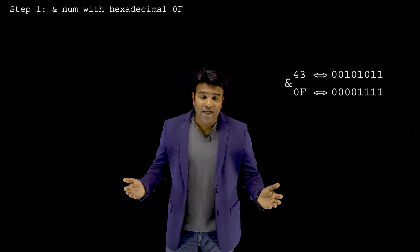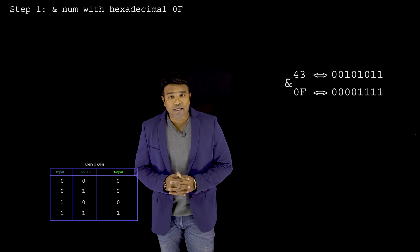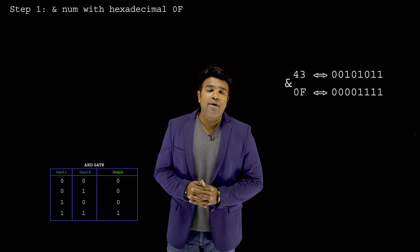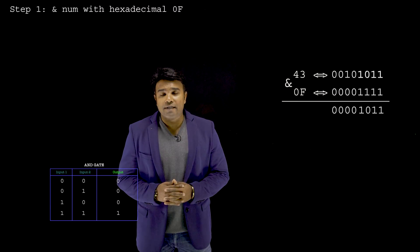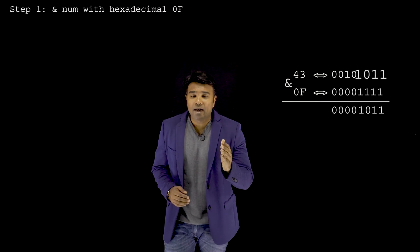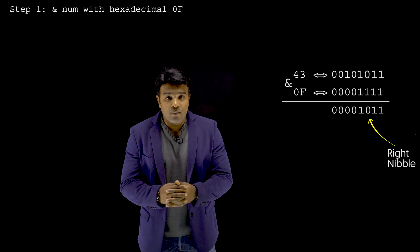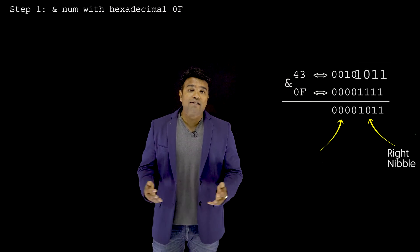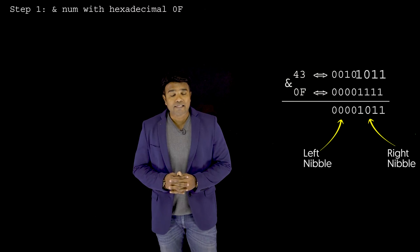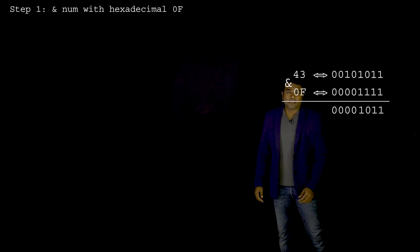The first step is to extract the right nibble from the byte. I just have to AND my data with hexadecimal 0F. This is my data 43, this is hexadecimal 0F. The AND operation behaves such that if and only if both inputs are one, the output is one; in all other cases, the output is zero. Applying AND, all the bits of the right nibble are preserved, and the bits of the left nibble become all zeros — successfully extracting the right nibble.